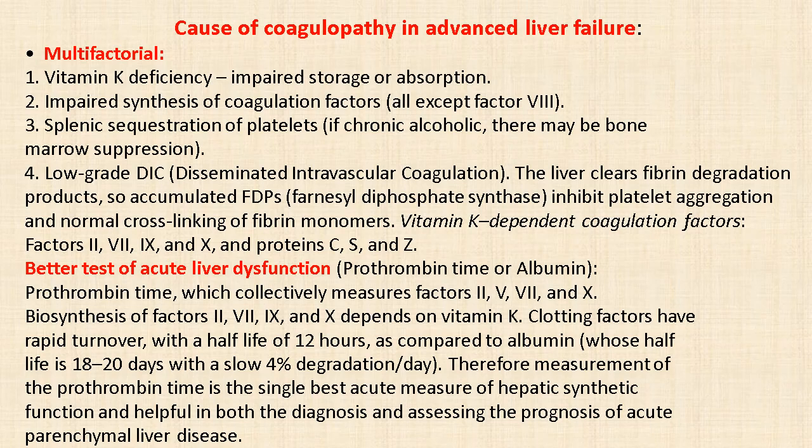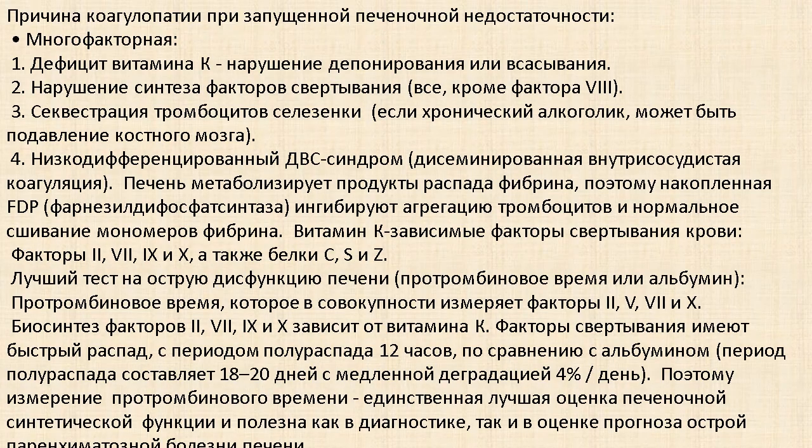Prothrombin time collectively measures factors 2, 5, 7, and 10. Synthesis of factors 2, 7, 9, and 10 depends on vitamin K. Coagulation factors have a rapid turnover with a half-life of 12 hours, as compared to albumin whose half-life is 18–20 days with a slow 4% degradation per day.